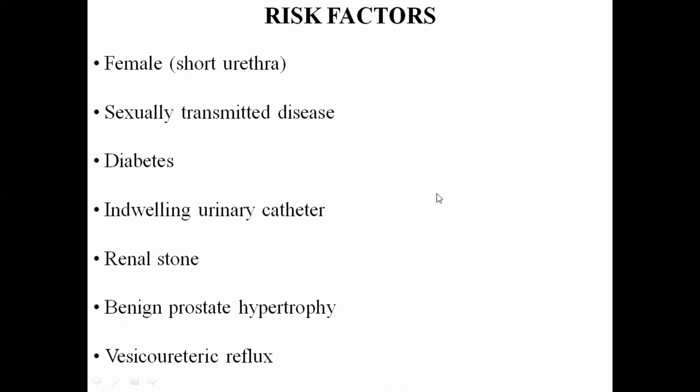Second risk factor is sexually transmitted disease such as gonorrhea, which is more common in females. Infection of the cervix, fallopian tubes, or uterus can allow bacteria to spread towards the urinary tract, making STDs a risk factor for UTI. Third is diabetes — in diabetic patients, the immune defense mechanism is reduced, reducing the capacity to fight infections, making recurrent UTI common.